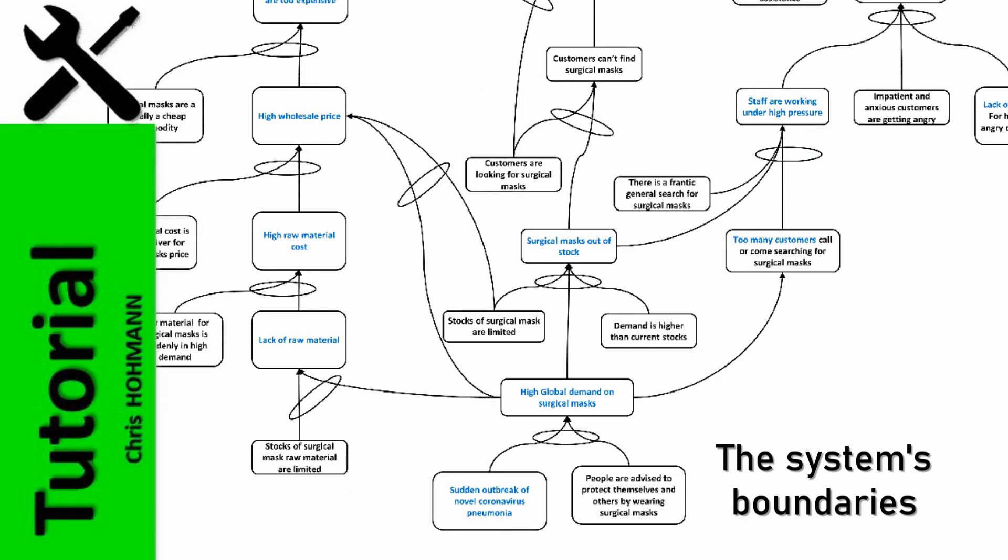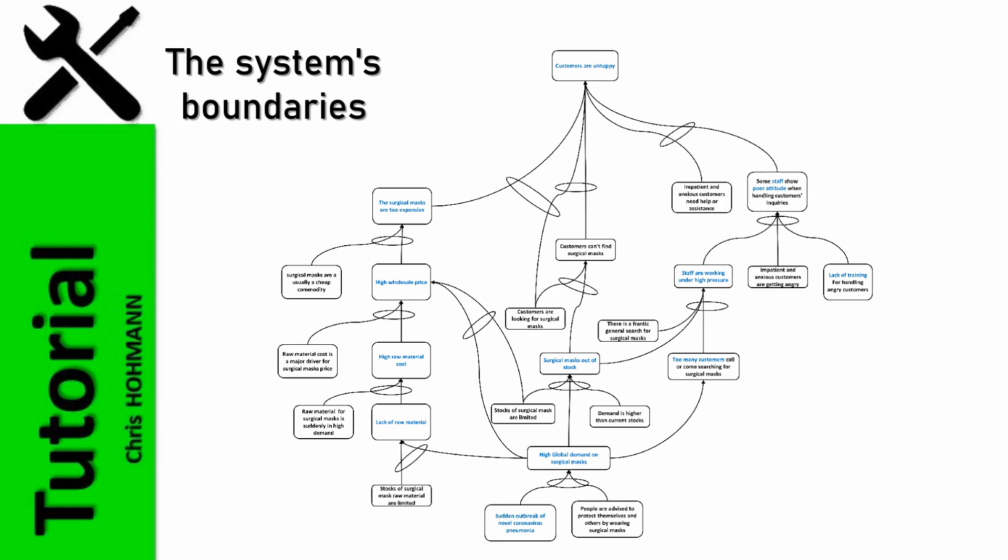If we come back to the current reality tree, as a company, we cannot control the next outbreak of a pandemic. We cannot prevent people being informed about the importance of surgical masks as preventive means. We cannot even control the global demand for masks in case of a pandemic outbreak. Therefore, the three bottom entities are beyond control and beyond influence. I would consider the system as all entities except the three bottom ones.